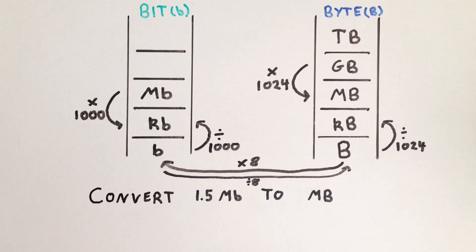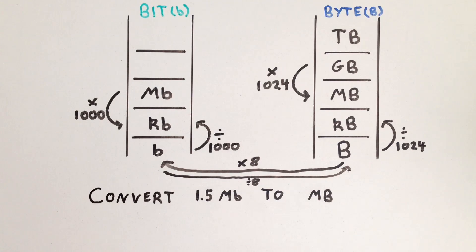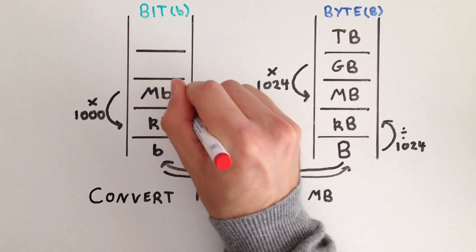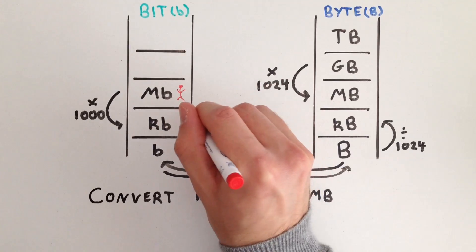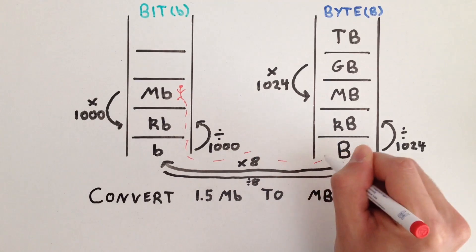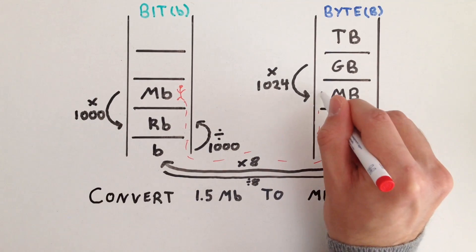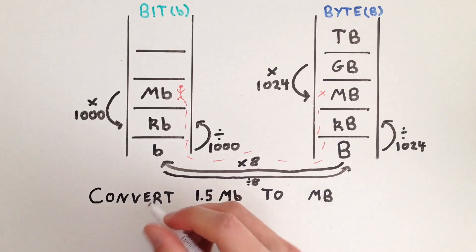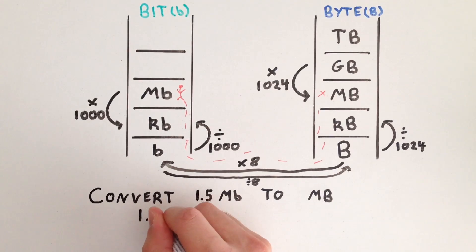Let's do another example: convert 1.5 megabits to megabytes. So where are we? We're converting from megabits to megabytes, so we are here, and we need to get to megabytes, so over here. So we write our number, 1.5.